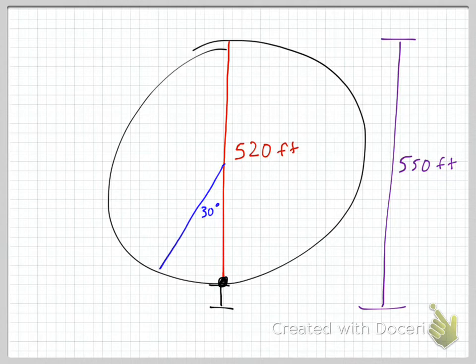The other thing is, let's say the distance traveled is 30 degrees around the Ferris wheel. We want to draw that.